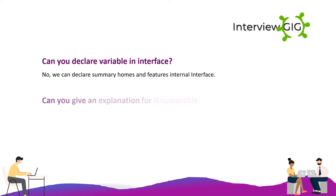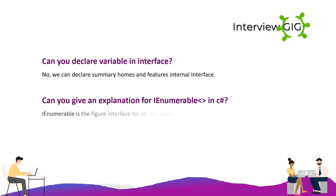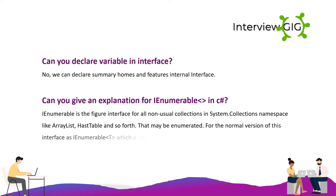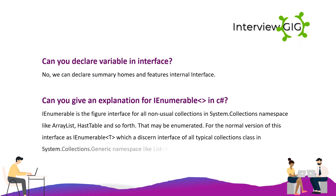What is IEnumerable in C#? IEnumerable is the base interface for all non-generic collections in the System.Collections namespace, such as ArrayList and Hashtable, that can be enumerated. The generic version of this interface is IEnumerable<T>, which is the base interface for all generic collection classes in the System.Collections.Generic namespace, such as List<T> and more.